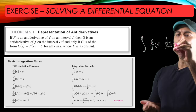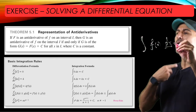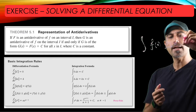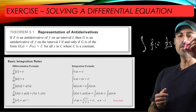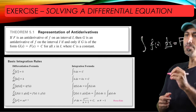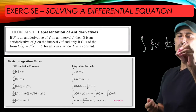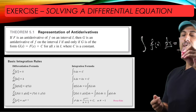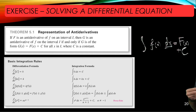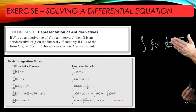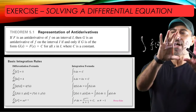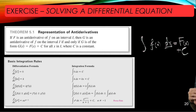Once you know one antiderivative — let's call it capital F — the answer is F(x) plus an arbitrary constant C, because antiderivatives differ by an arbitrary constant as I just mentioned. You list the family of all antiderivatives by adding an arbitrary constant to one of the antiderivatives of little f.